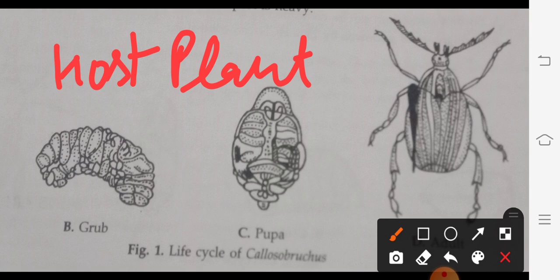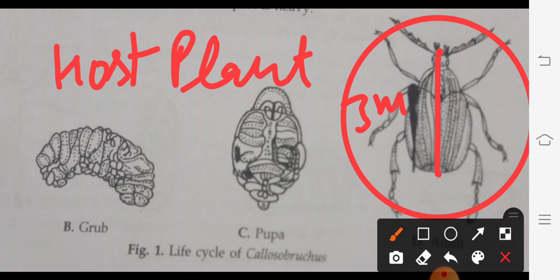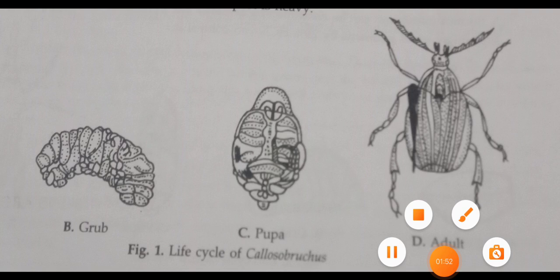If we talk about the general appearance of this insect, this insect looks like a beetle. This is the adult beetle and its body is about 3 mm long. Its length is 3 mm and they have two white spots near the middle of their body and have a comparatively smaller head.